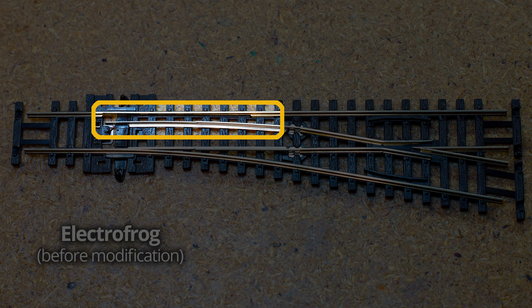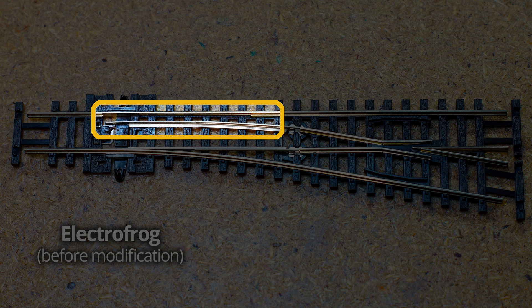The second problem with electrofrogs is that in their stock form, it's very easy for a short to occur in this section here. You've got opposite polarity running in parallel for a reasonable distance, and this is a common spot for locos to derail. So if your loco derails anywhere in here, you've got a decent chance that contact could be made across these two surfaces. For example, when a metal wheel touches both at the same time, dead short.